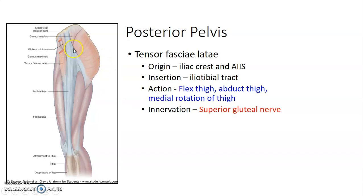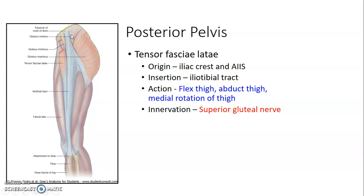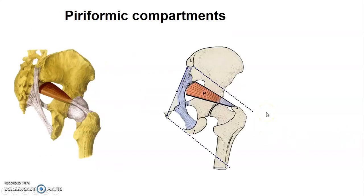Tensor fasciae latae originates from the iliac crest and anterior inferior iliac spine and inserts onto the iliotibial tract. It causes flexion of the thigh, abduction, and medial rotation. Like gluteus medius and minimus, it is innervated by the superior gluteal nerve.